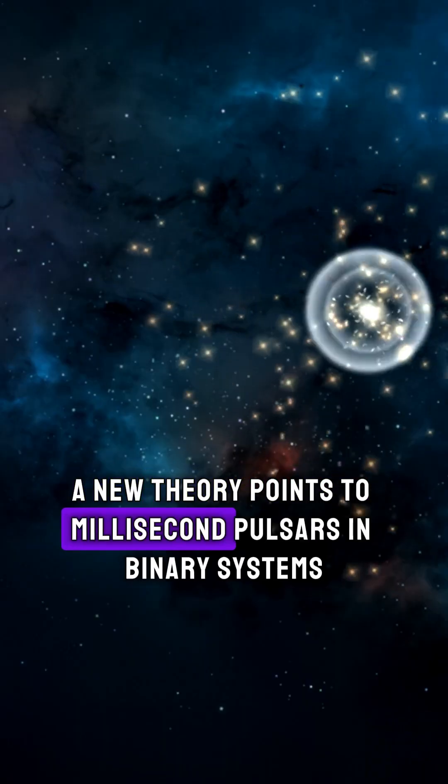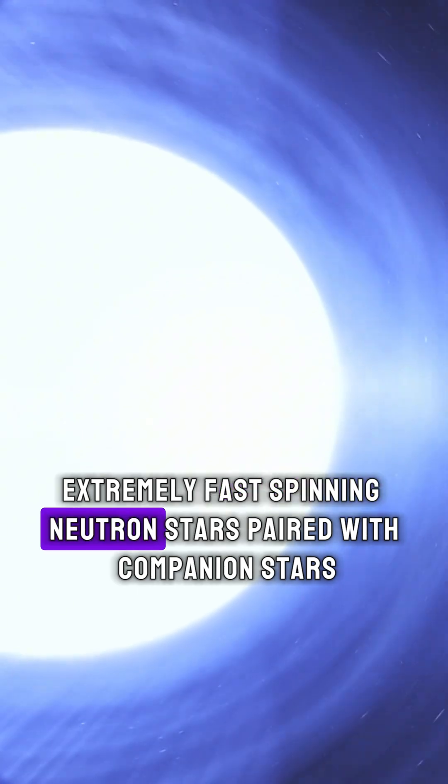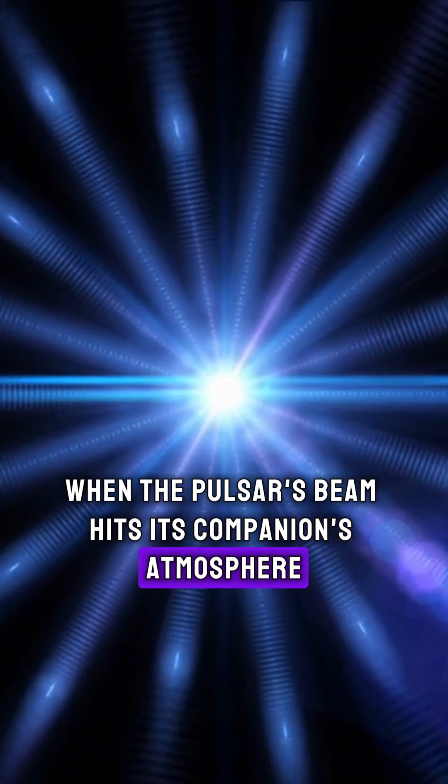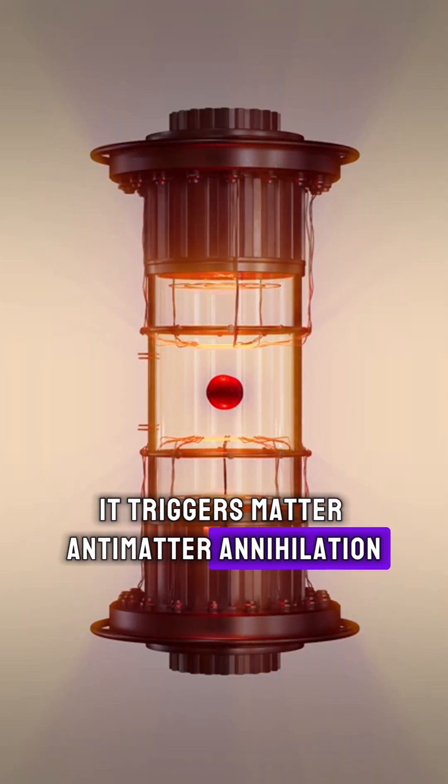A new theory points to millisecond pulsars in binary systems. Extremely fast, spinning neutron stars paired with companion stars. When the pulsar's beam hits its companion's atmosphere, it triggers matter-antimatter annihilation.